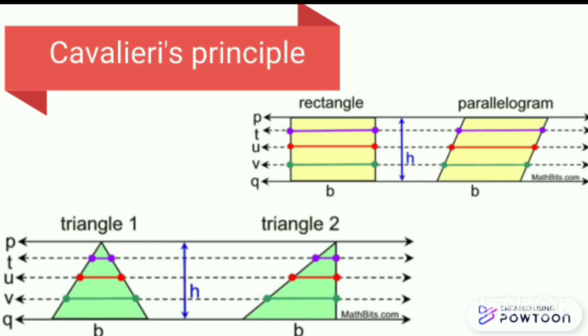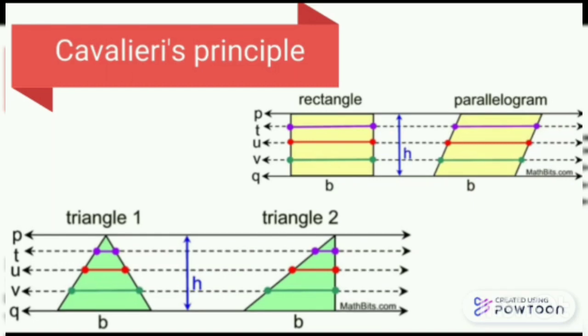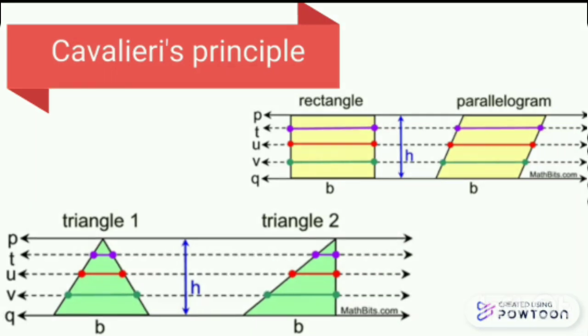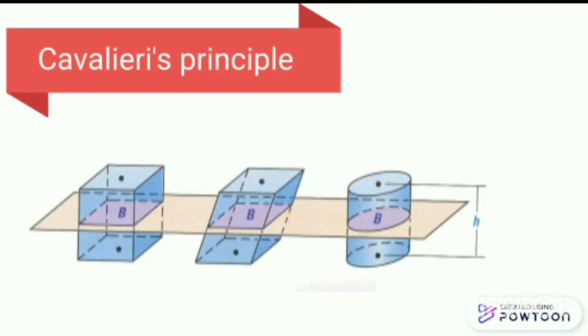Cavalieri's principle states that in case of two dimensions, suppose two regions in a plane are included between two parallel lines in that plane. If every line parallel to these two lines intersects both regions in line segments of equal length, then the two regions have equal areas.